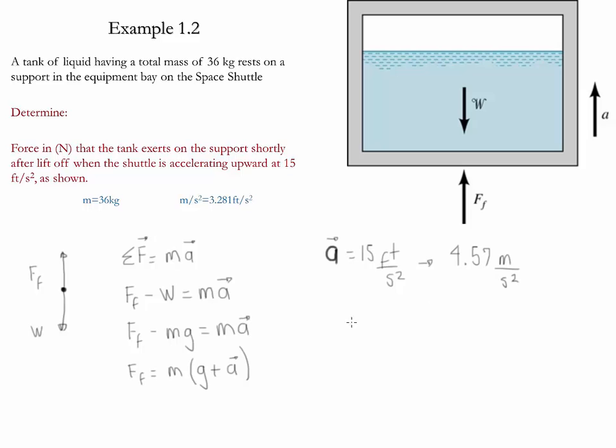If we substitute the acceleration of 4.57 meters per second squared, gravity of 9.81 meters per second squared, and mass of 36 kilograms, we find that the force equals 517.74 kilograms meter per second squared. Since kilograms meter per second squared is equivalent to a Newton, the final result is 517.7 Newtons.